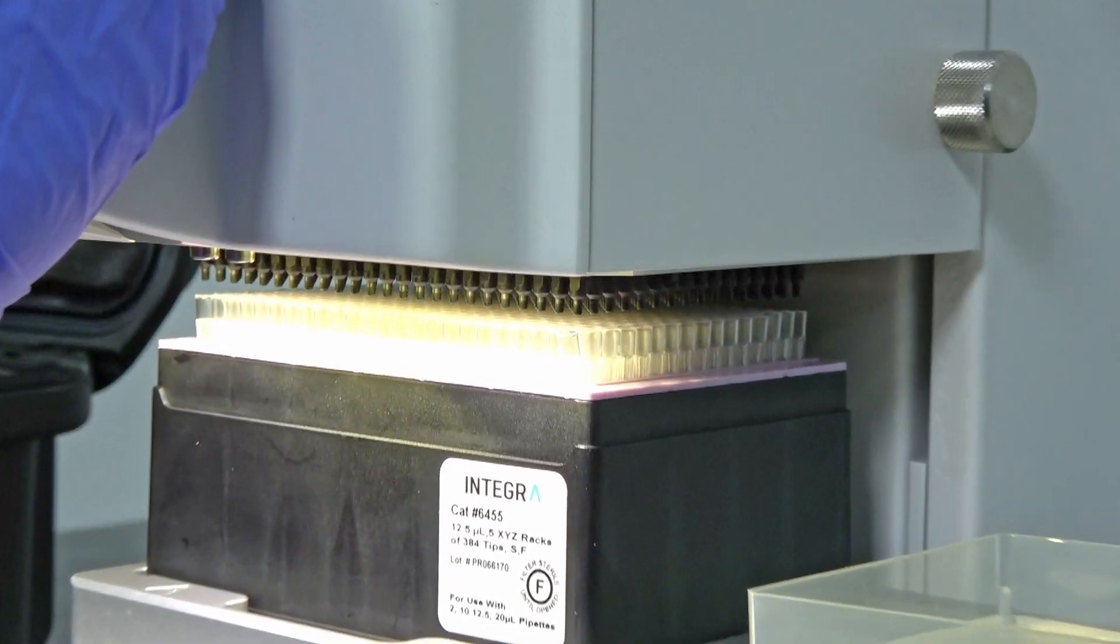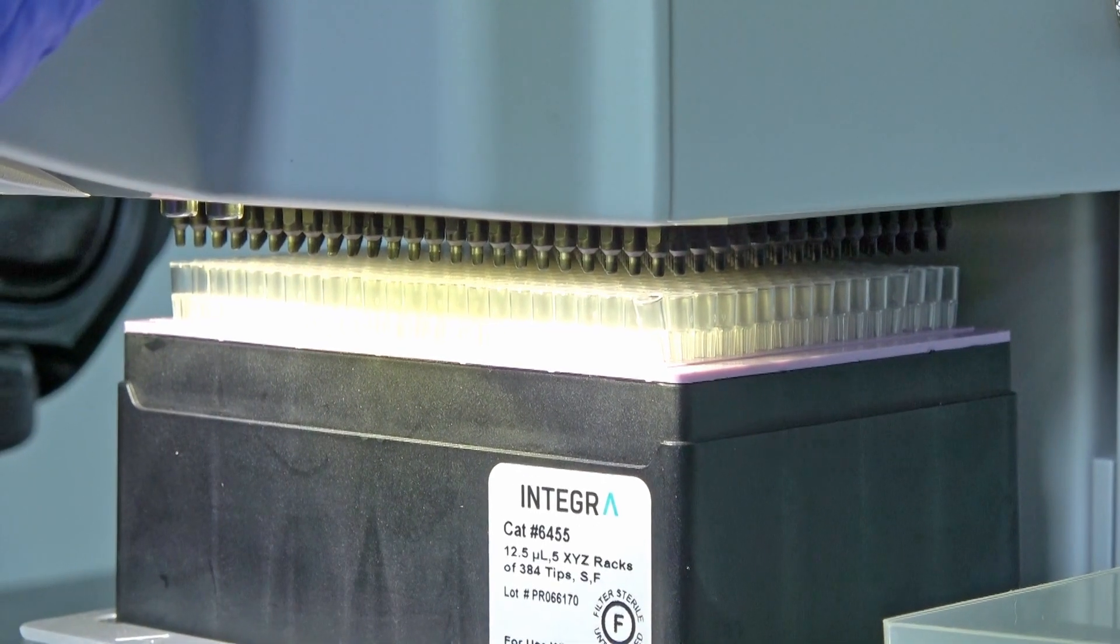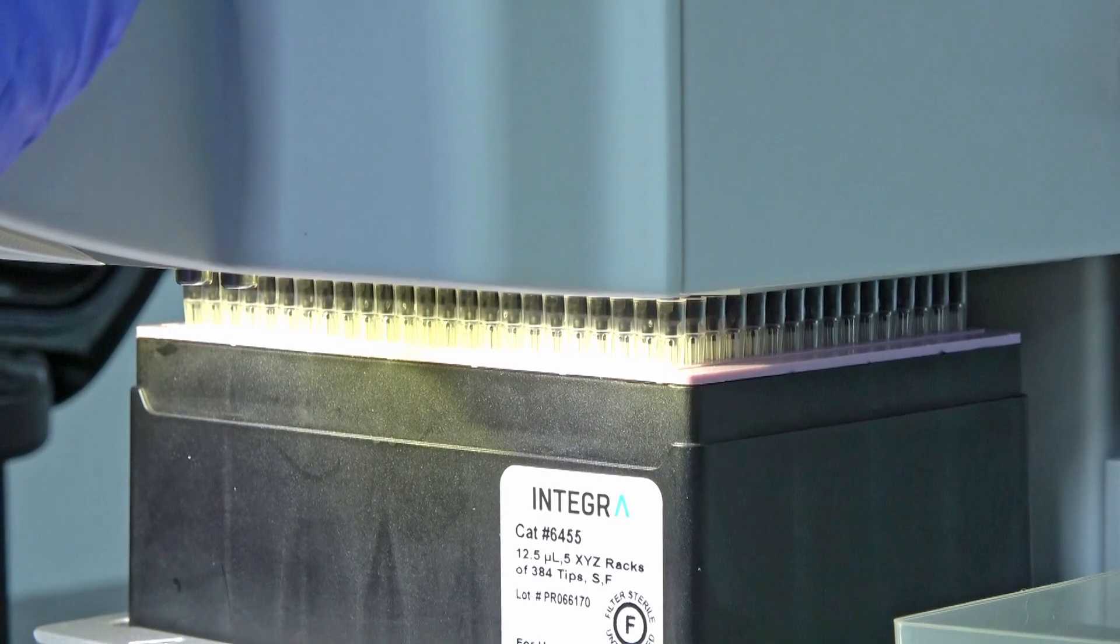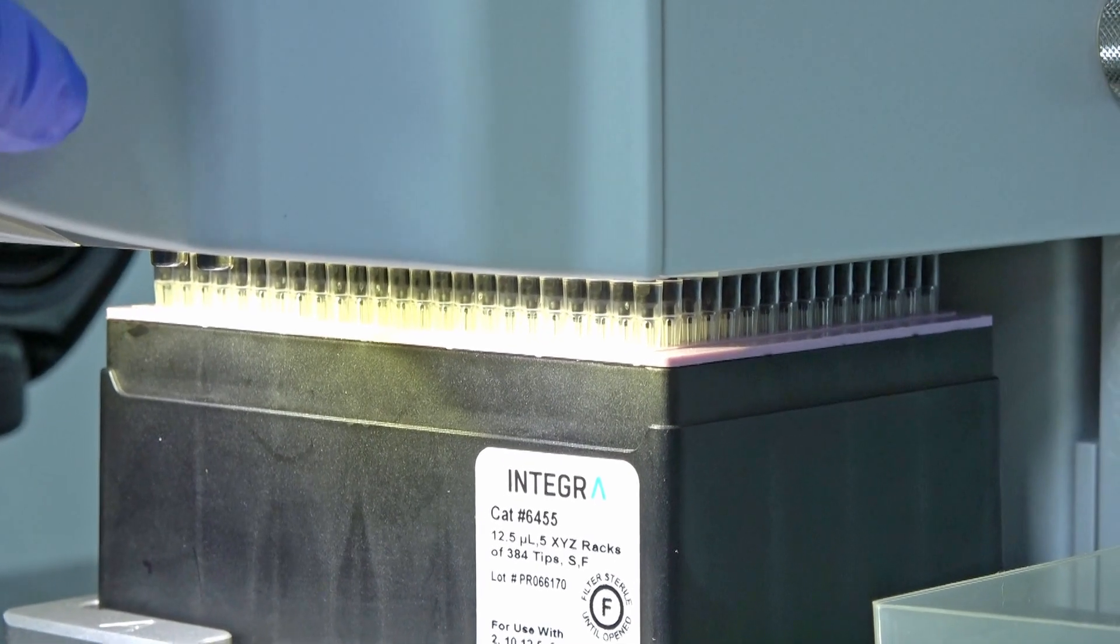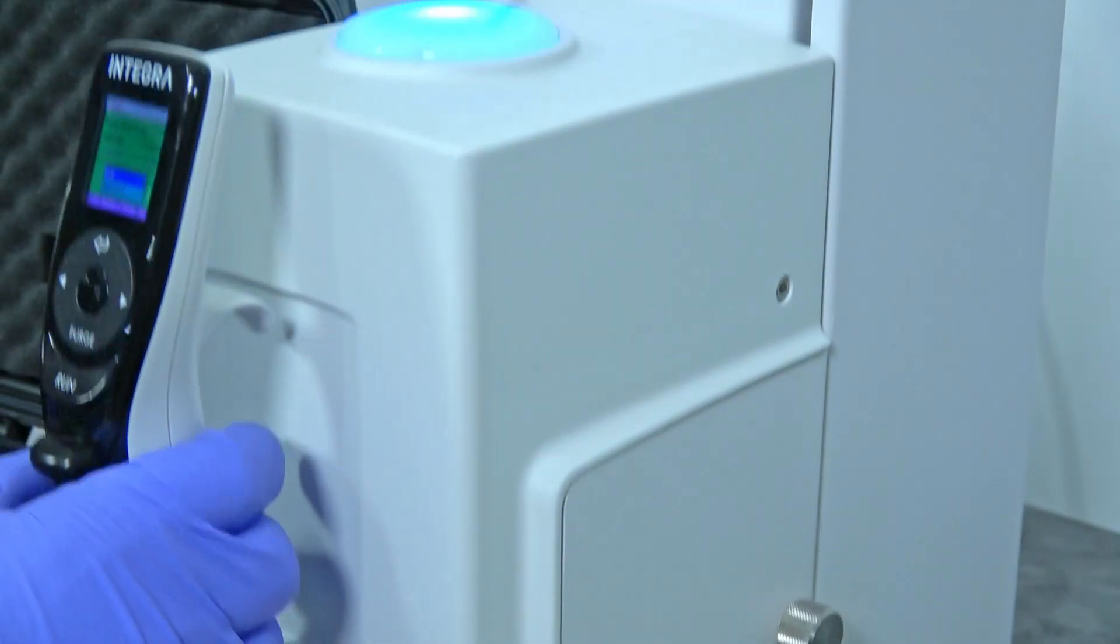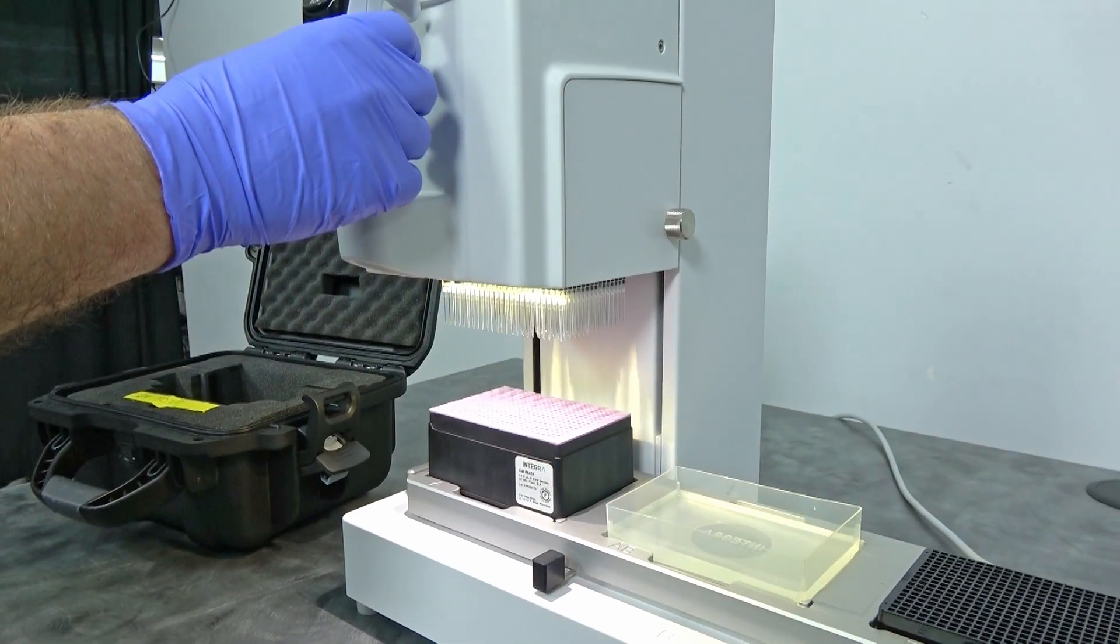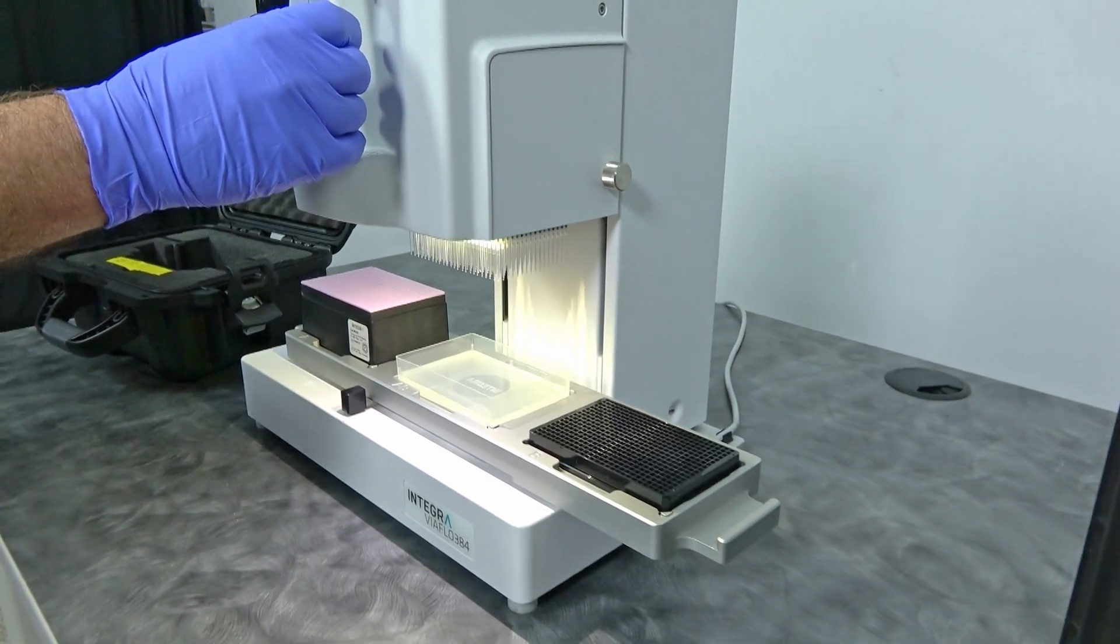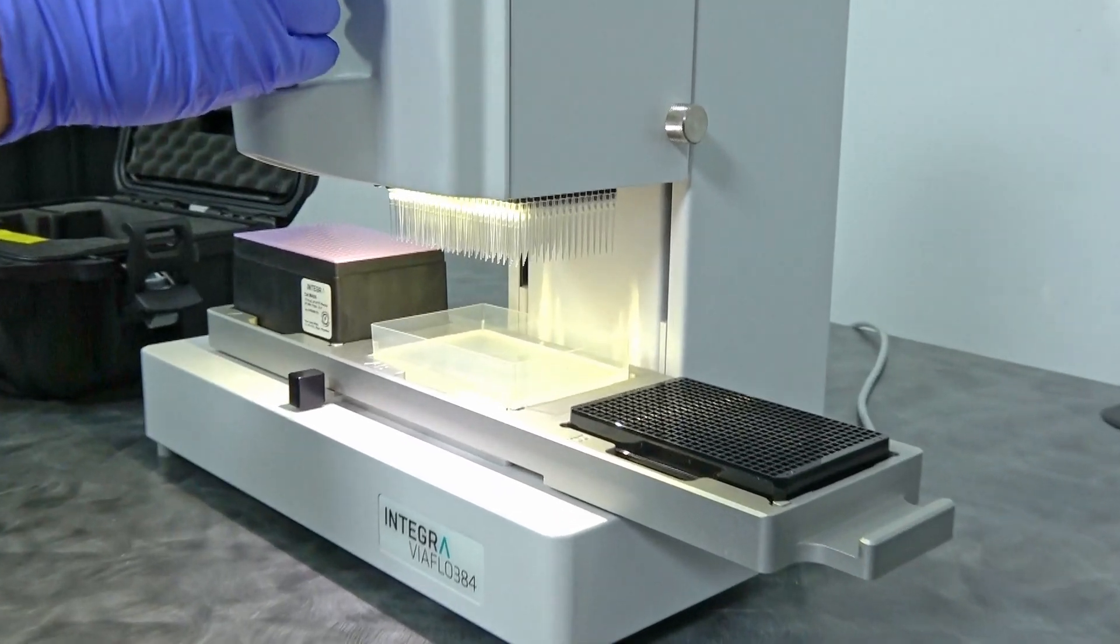We're going to go ahead and load the tips first. Get it down here, and we want to line it up. Once it's lined up, we're going to go ahead and hit the button. And that gets us loaded. So the machine actually does the last initial press when it loads the tips, so you're not pushing down on the machine. It does it for you whenever you hit the top button.